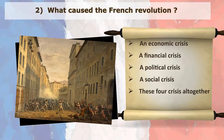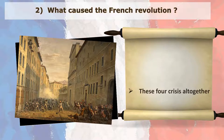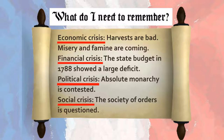What caused the French Revolution? These four crises all together: economic crisis — harvests are bad, misery and famine are coming; financial crisis — the state budget in 1788 showed a large deficit; political crisis — absolute monarchy is contested; social crisis — the society of orders is questioned.